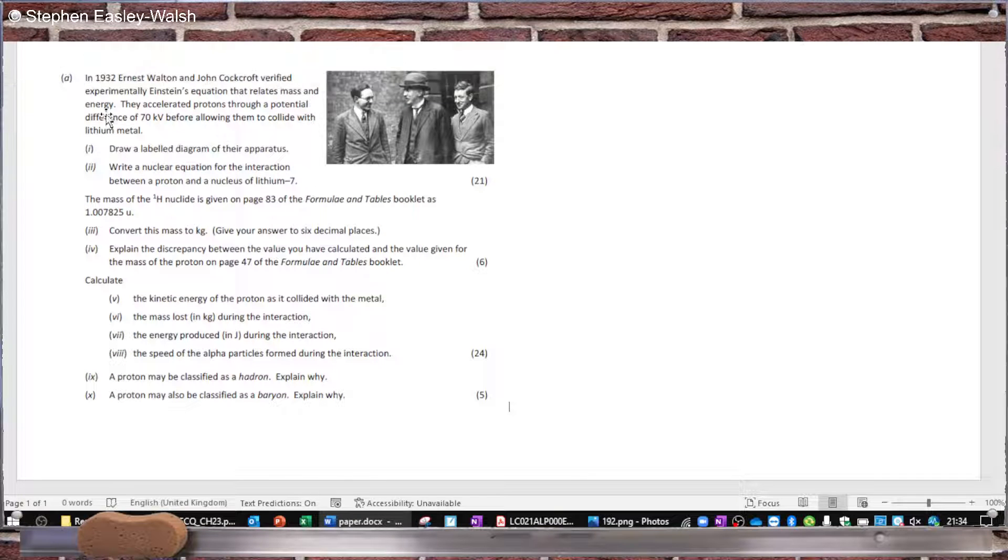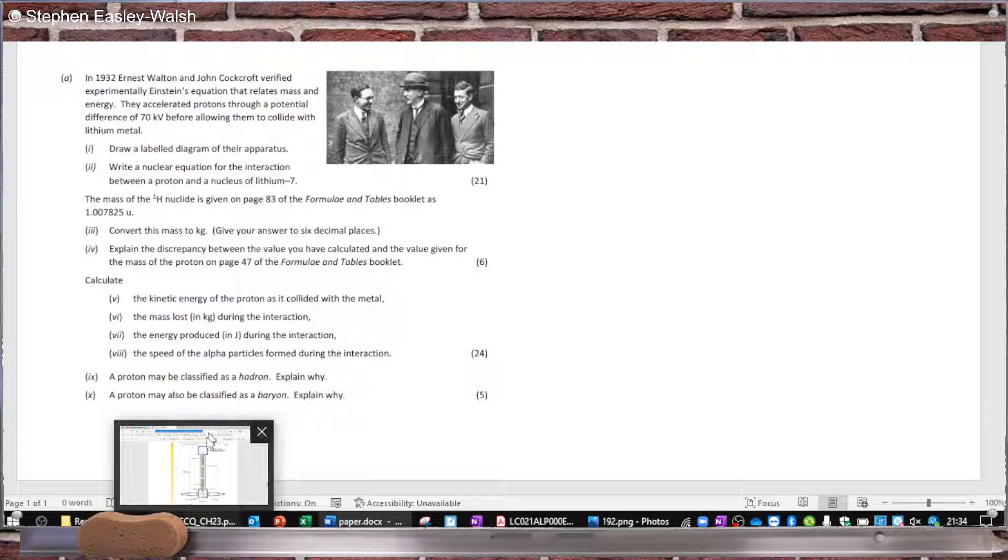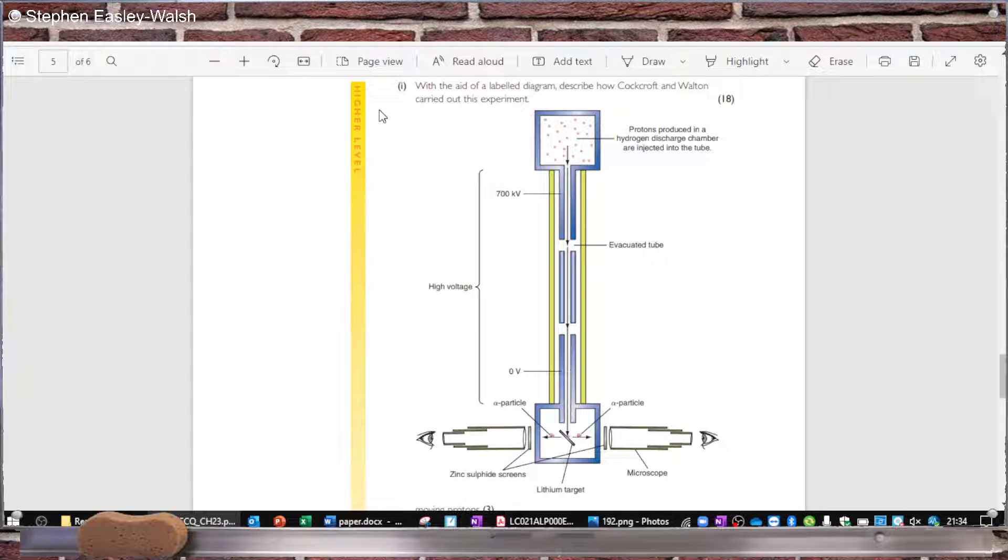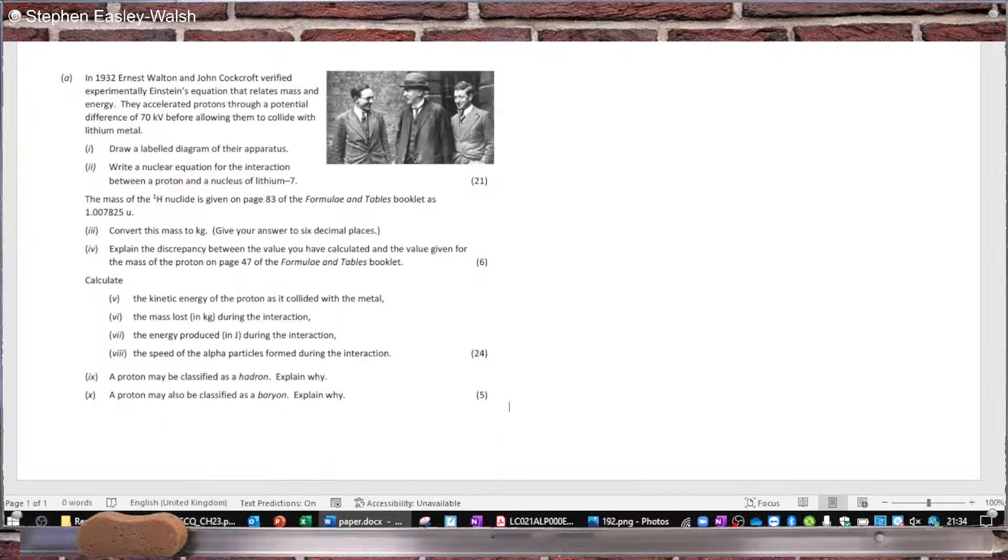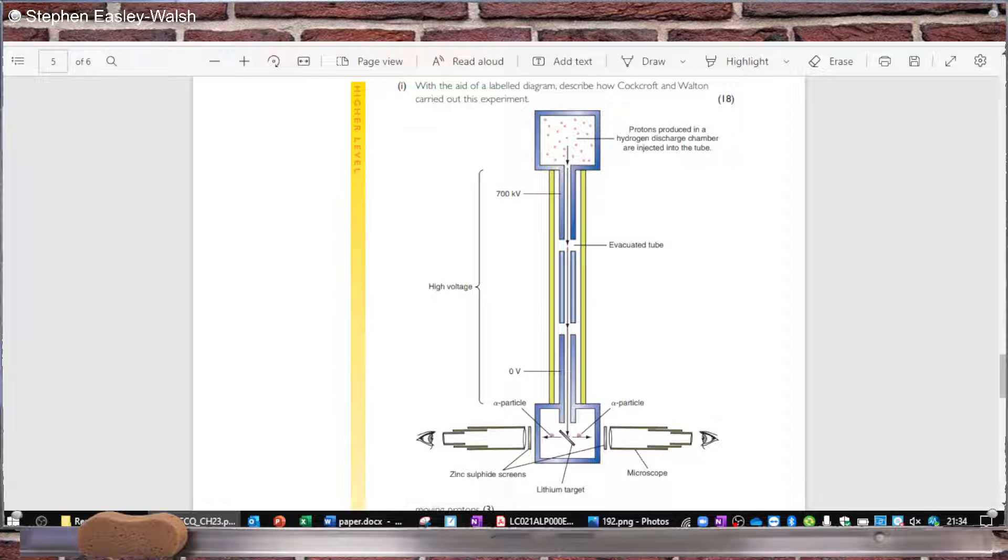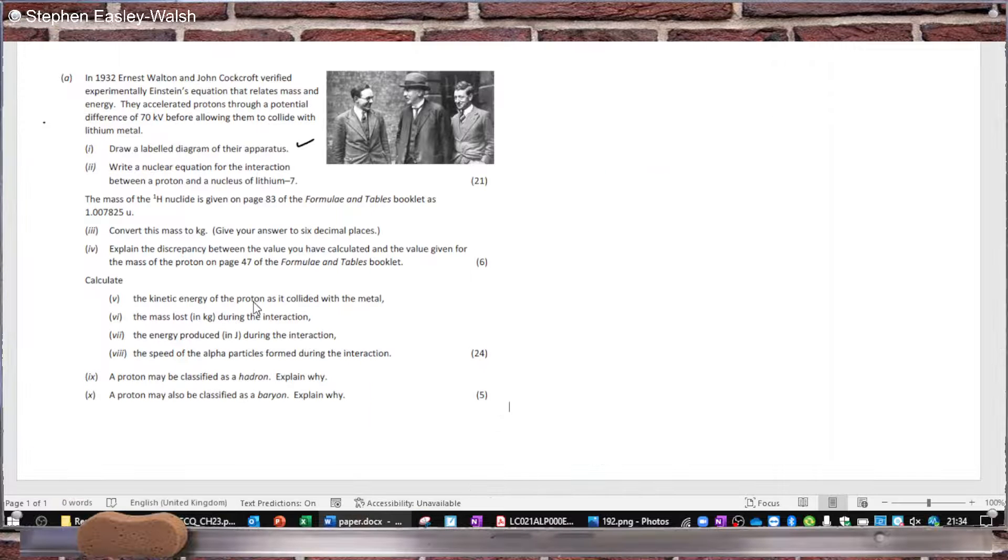Okay, let's have a look here. The first one is a labeled diagram of the apparatus that Walton and Cockcroft used. Actually, there's no point in me drawing something that exists perfectly well in a book. So a quick Google got this rather nice diagram. You probably have something in your physics book very similar or identical to that. That one's okay, this is the standard sort of experiment diagram question.